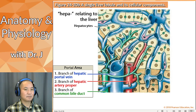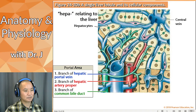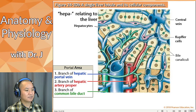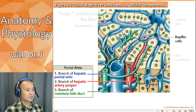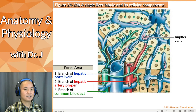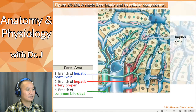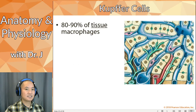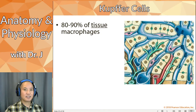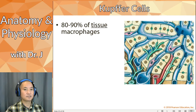Hepatocytes make bile — that mixture important for digestion. You also have central veins in each of the lobes, so there's a whole network of vessels and bile ducts. You also have special cells called Kupffer cells. They're important because they are tissue macrophages. Pretty much every drop of blood in your body will eventually circulate and filter through your liver.